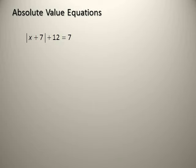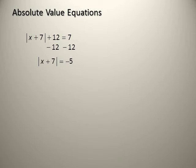Solve |x + 7| + 12 = 7. First isolate the absolute: |x + 7| = 7 − 12 = −5. Since the result is negative, there is no solution for this equation.